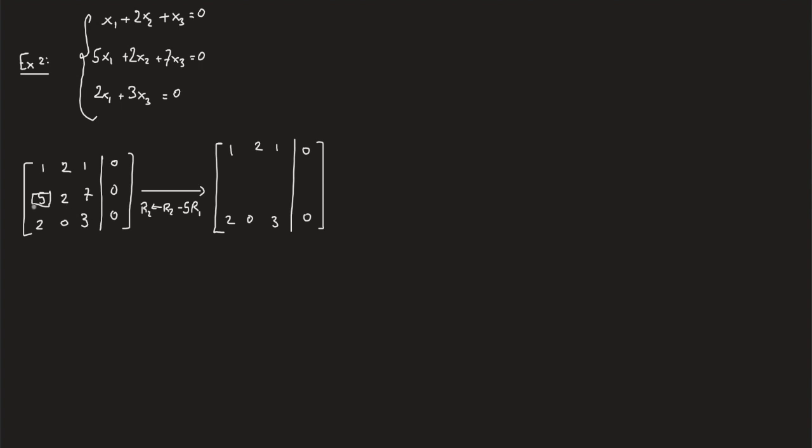First off, the first and third rows are the same because only r2 is being replaced. We get: 5 minus 5 is 0, 2 minus 5 times 2 is -8, 7 minus 5 times 1 is 2, and 0 minus 5 times 0 is 0.